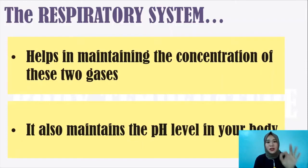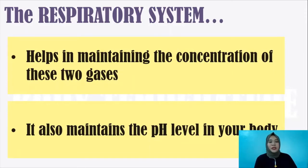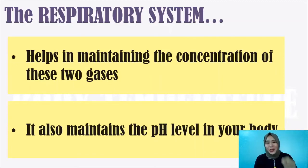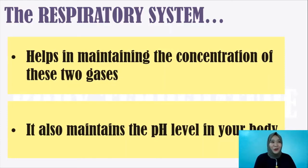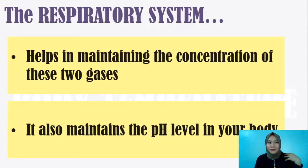You already know the functions of the respiratory system — these were discussed during the organismal biology topic. Aside from maintaining the concentration of oxygen and carbon dioxide, the respiratory system also makes sure that the pH level inside your body is controlled and maintained. The body requires a precise pH level for cells, organs, and tissues to function properly.